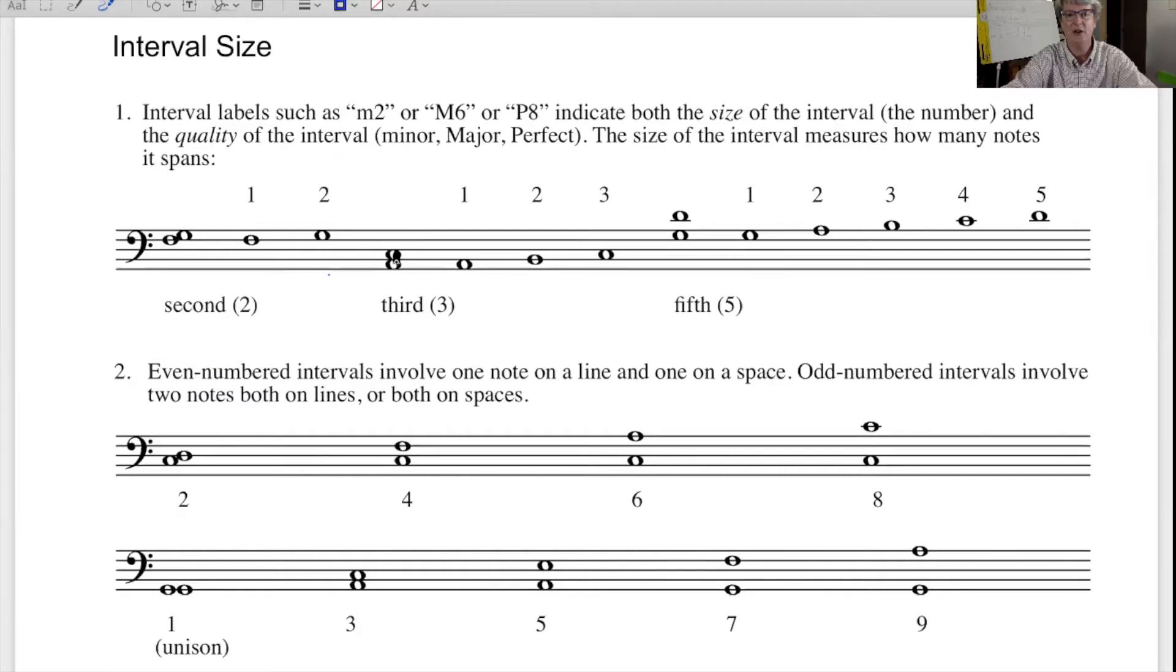From A to C, we would count one, two, three. This is a third. From G to D, we would count one on G, two on A, three on B, four on C, five on D. This is a fifth.